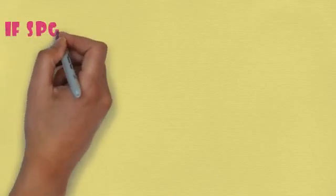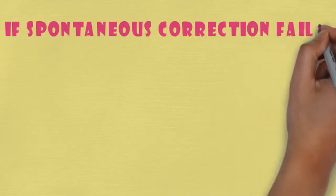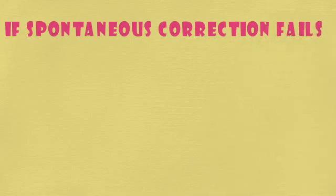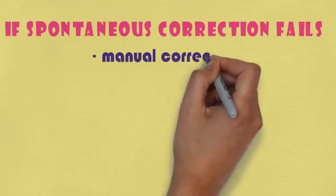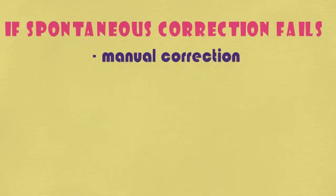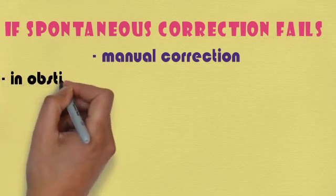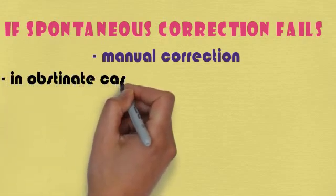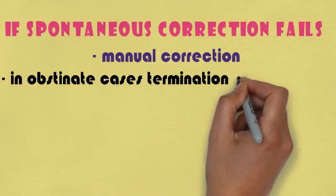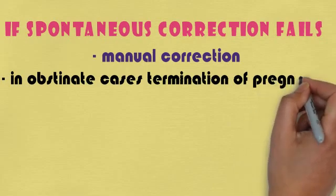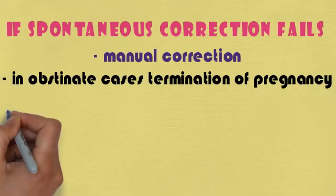If the uterus is not spontaneously corrected after 48 hours, the first management is manual correction — manually we try to correct it with the use of ultrasound or other technology. If it is obstinate, meaning stubborn and not going to be corrected, we have to terminate the pregnancy — there is no other choice.